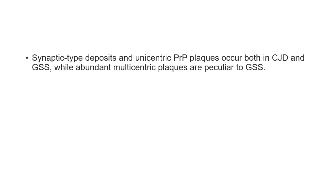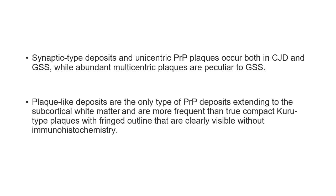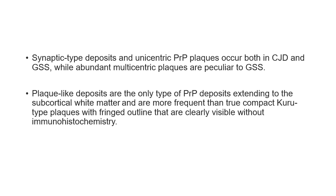Synaptic-type deposits and unicentric PRP plaques occur in both CJD and Gerstmann-Sträussler-Scheinker syndrome, while abundant multicentric plaques are peculiar to Gerstmann-Sträussler-Scheinker syndrome. Plaque-like deposits are the only type extending to the subcortical white matter and are more frequent than true compact Kuru-type plaques. Kuru-type plaques have a characteristic radiating or fringed outline that usually does not require IHC.